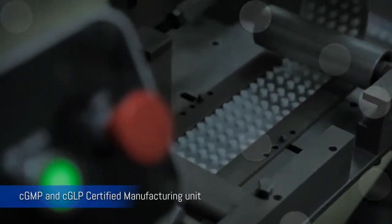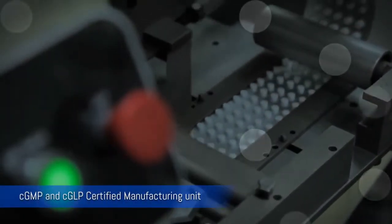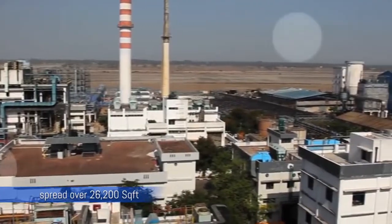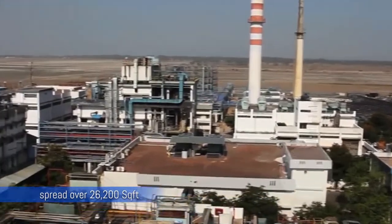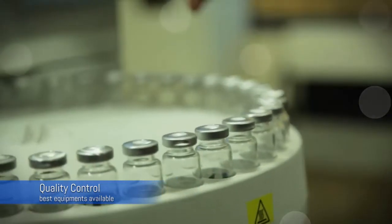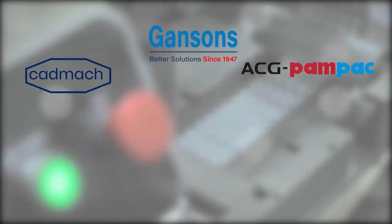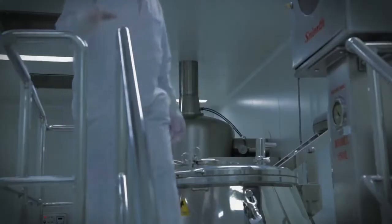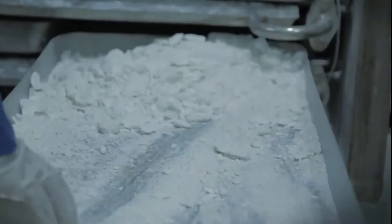Its CGMP and CGLP certified manufacturing unit is built according to WHO standards and meets all the requirements of Schedule M. Spread over an area of 26,200 square feet, the in-house quality control area is equipped with the best equipment, available with the best in-class machinery from CADMACH, Gansons, Pampac, IMA and Dicraft and is run by a team of highly experienced personnel.